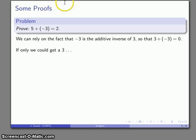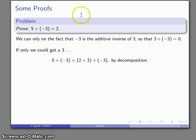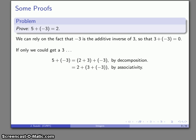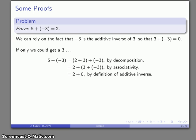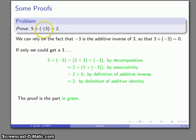If only I can get a three — well, I can split five up as two plus three, which is just a straight decomposition using whole number arithmetic. We're not making any assumptions about what the additive inverse of three is, but we know it acts in a specific fashion. By associativity and commutativity, I can regroup this addition. Three plus its additive inverse gives zero by definition, and by the additive identity, adding zero gives me two. The proof is the portion shown in green.